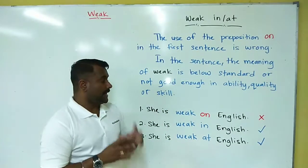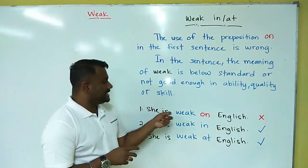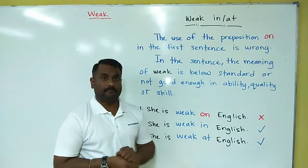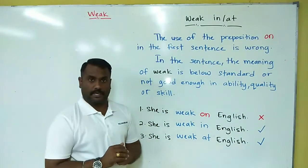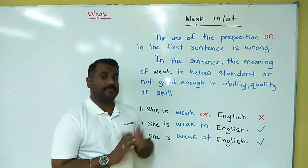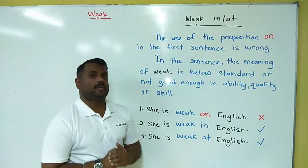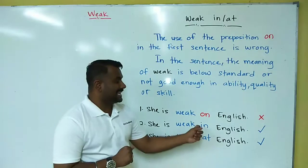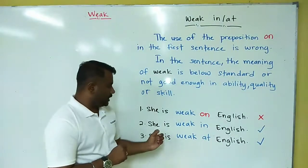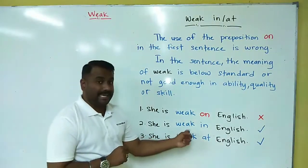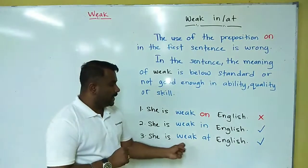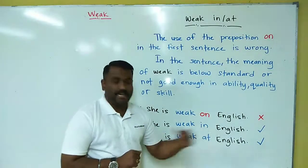You need to know: 'weak on English' — most of us are using that. 'She is weak on English' — that is wrong. You're supposed to use 'She is weak in English' or 'She is weak at English'.